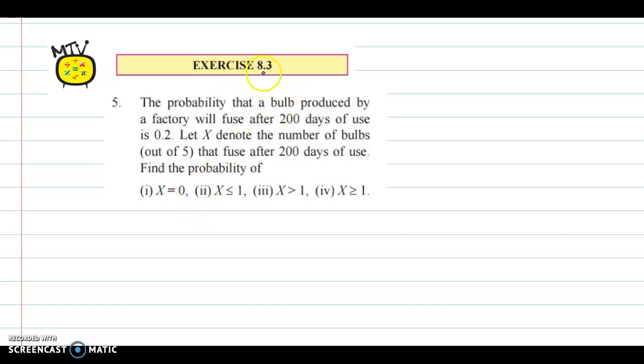Hello and welcome back to Exercise 8.3, Question 5. The probability that a bulb produced by a factory will fuse after 200 days of use is 0.2. Let X denote the number of bulbs out of 5 that fuse after 200 days of use. Find the probability of: X equal to 0, X less than or equal to 1, X greater than 1, and X greater than or equal to 1.